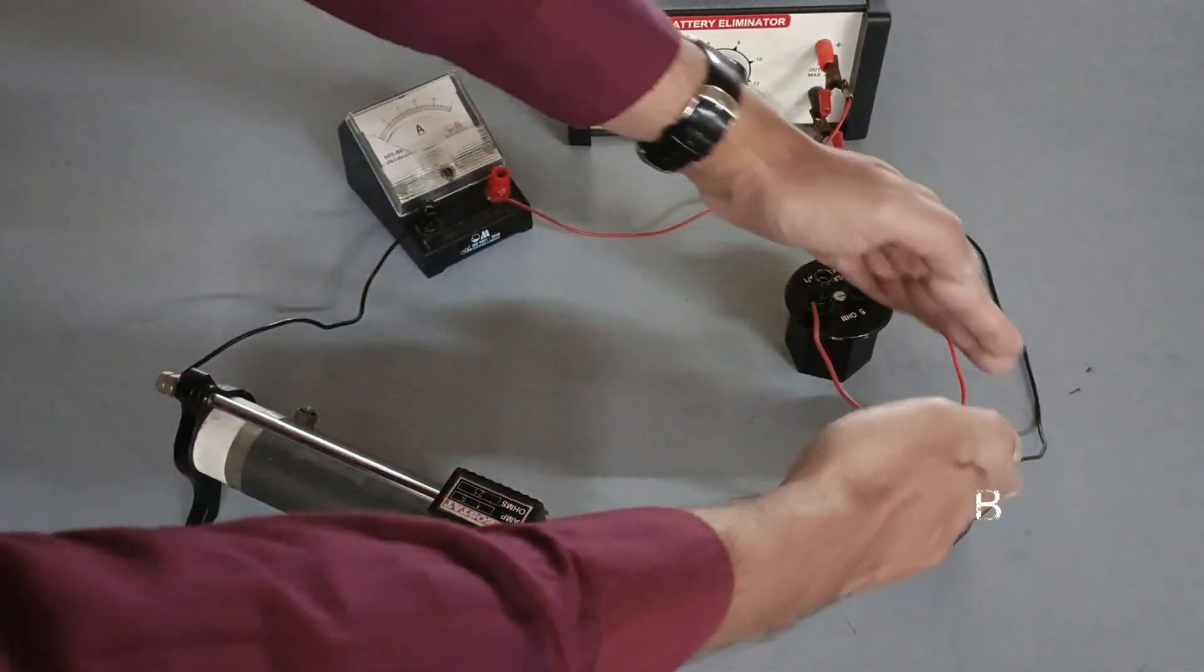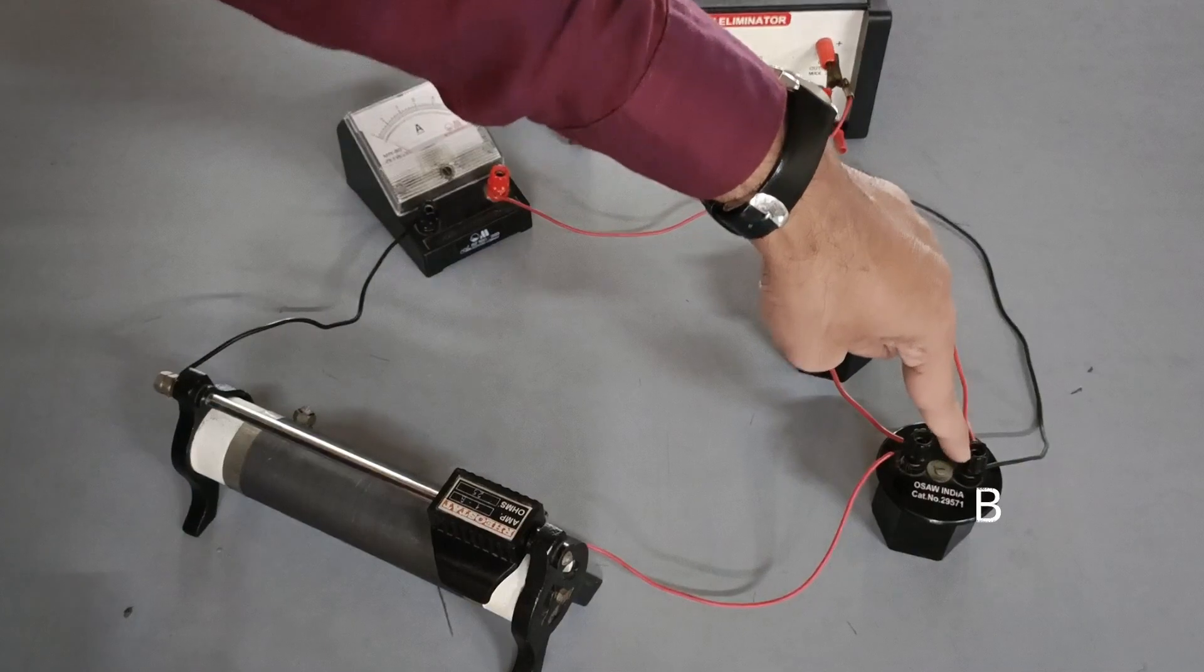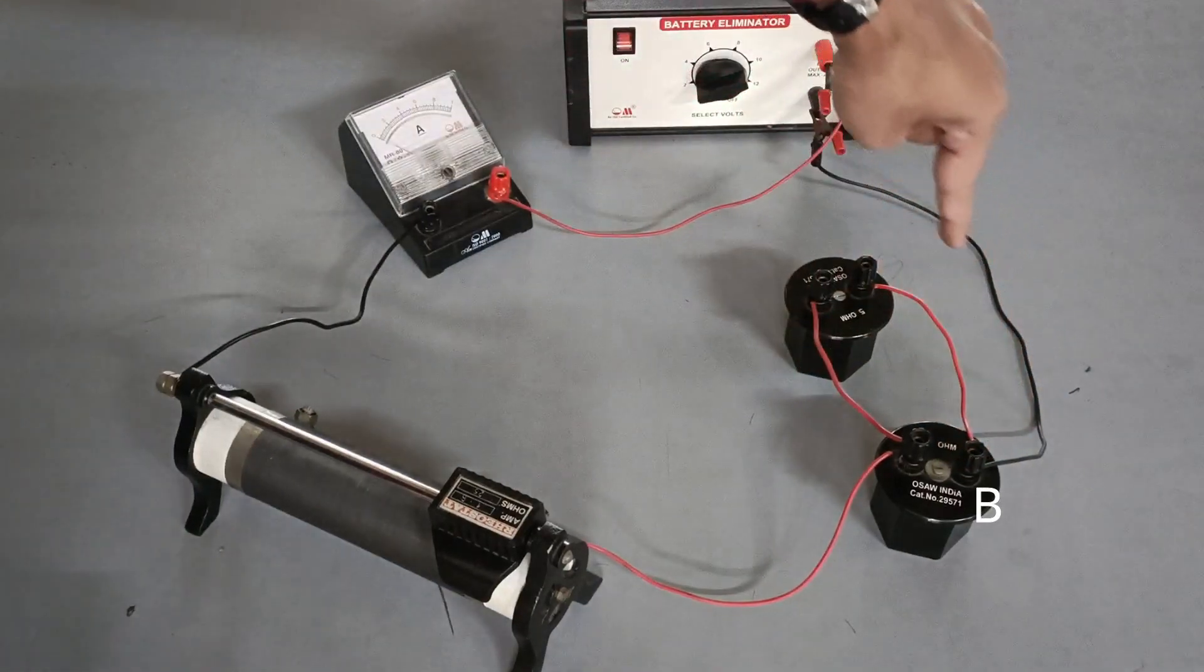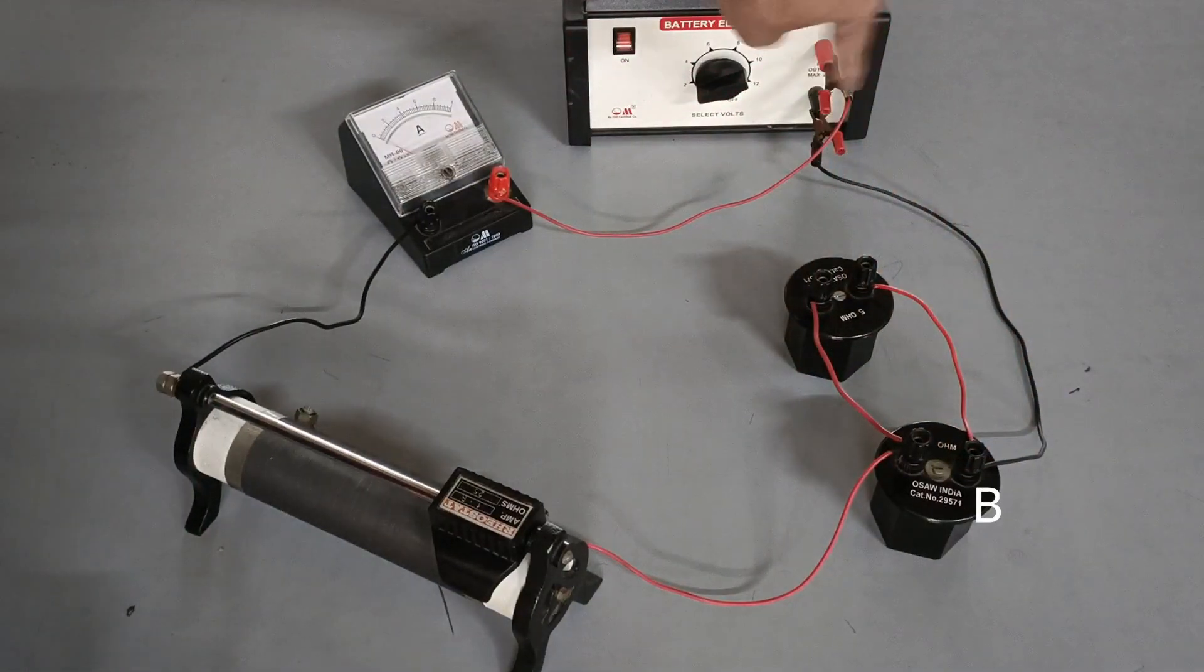Then both the currents join at end B. Finally, the total current flows out through the black wire into the negative terminal of the battery.